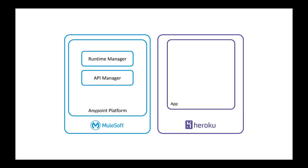For this demonstration, what I'm going to be showing you is how you can actually deploy a Mule runtime into Heroku. If you know some of the benefits of the Anypoint platform, you know that we provide hybrid capabilities. Out of the box, we do provide Cloud Hub that allows you to deploy your integrations into our iPaaS platform. But you also have the added benefit of deploying into a private cloud or on-premise. In this case, we're going to be deploying it into Heroku.